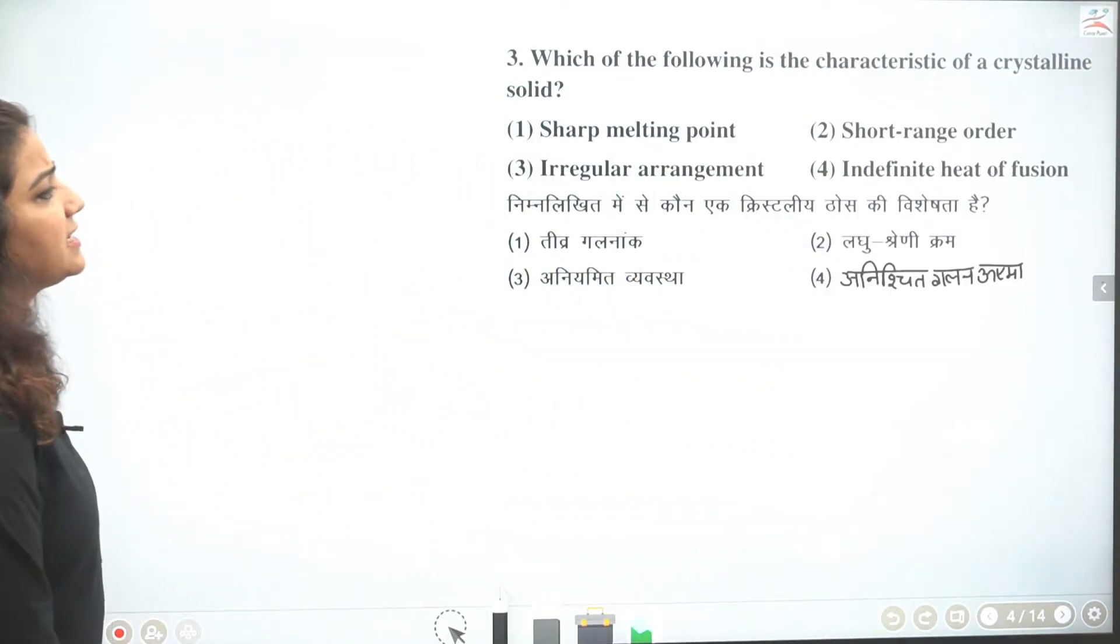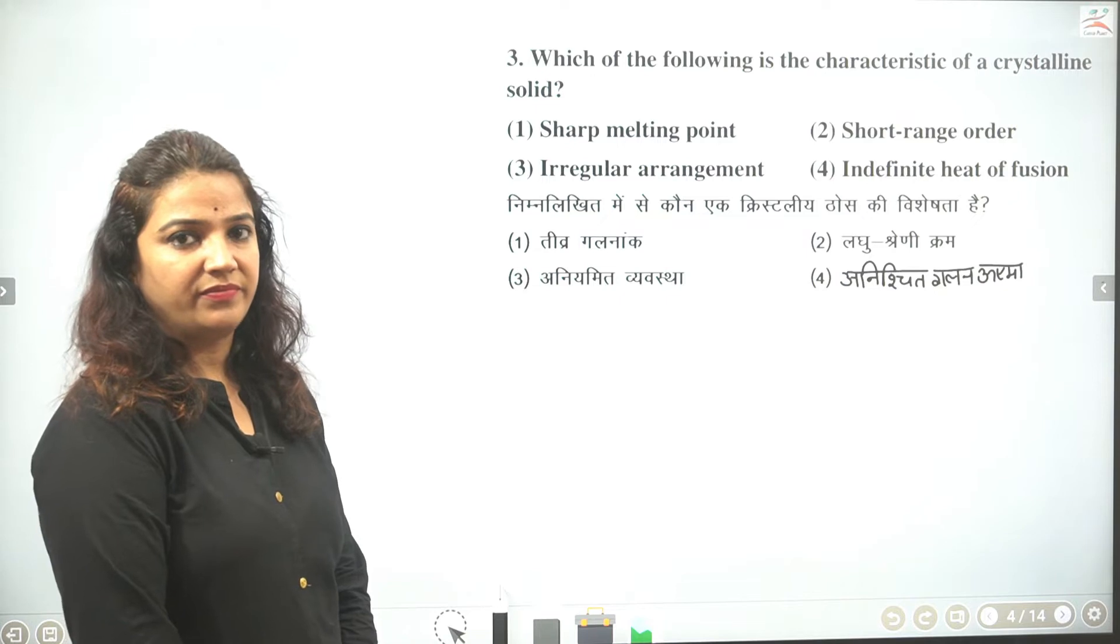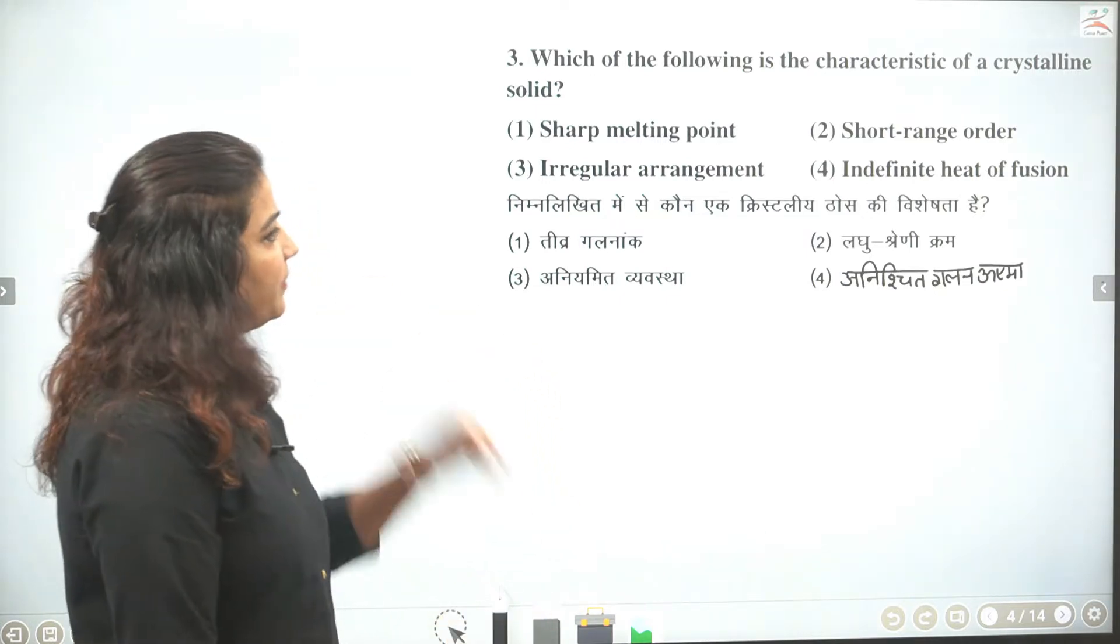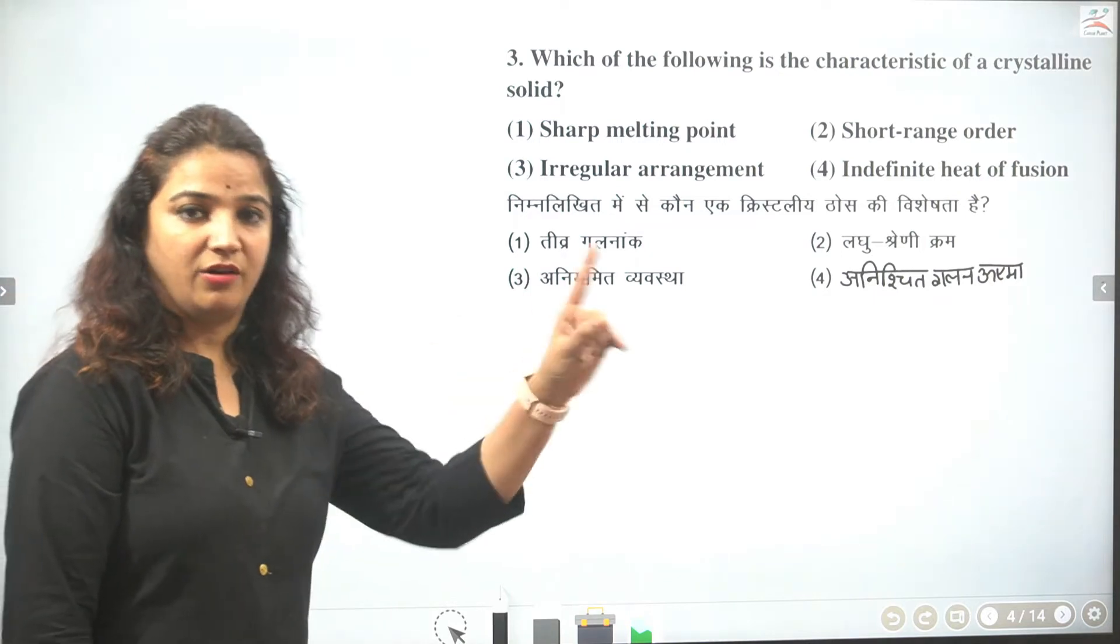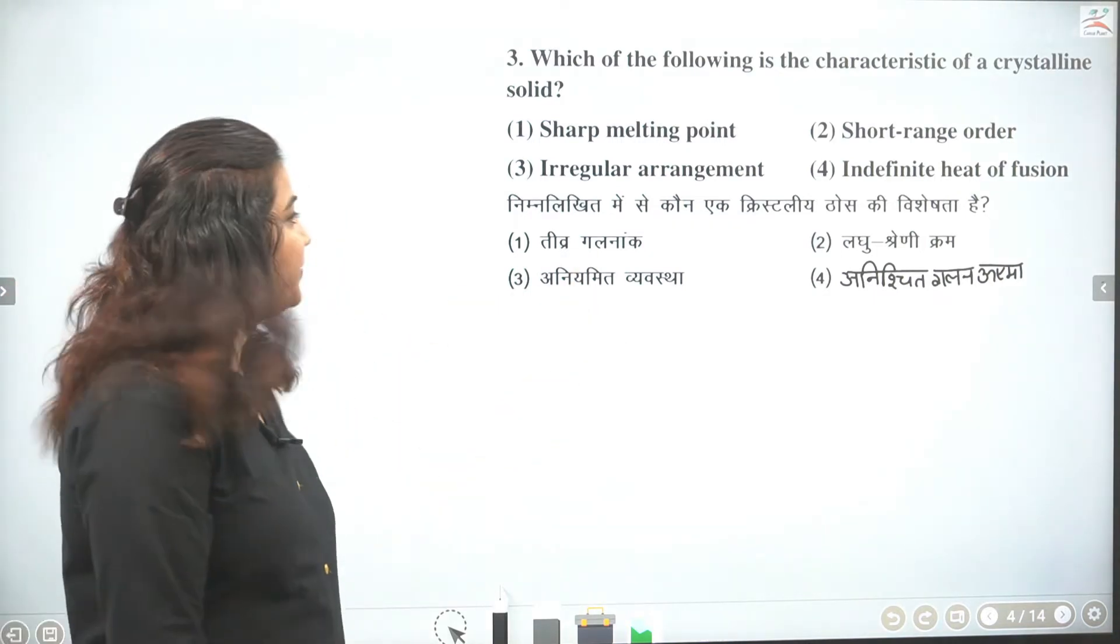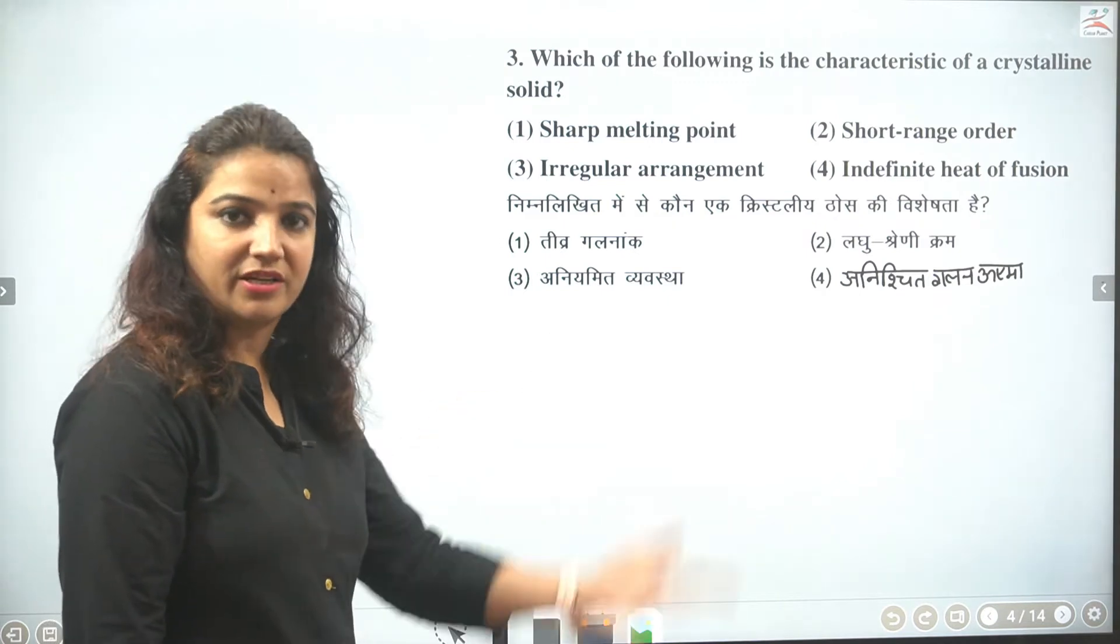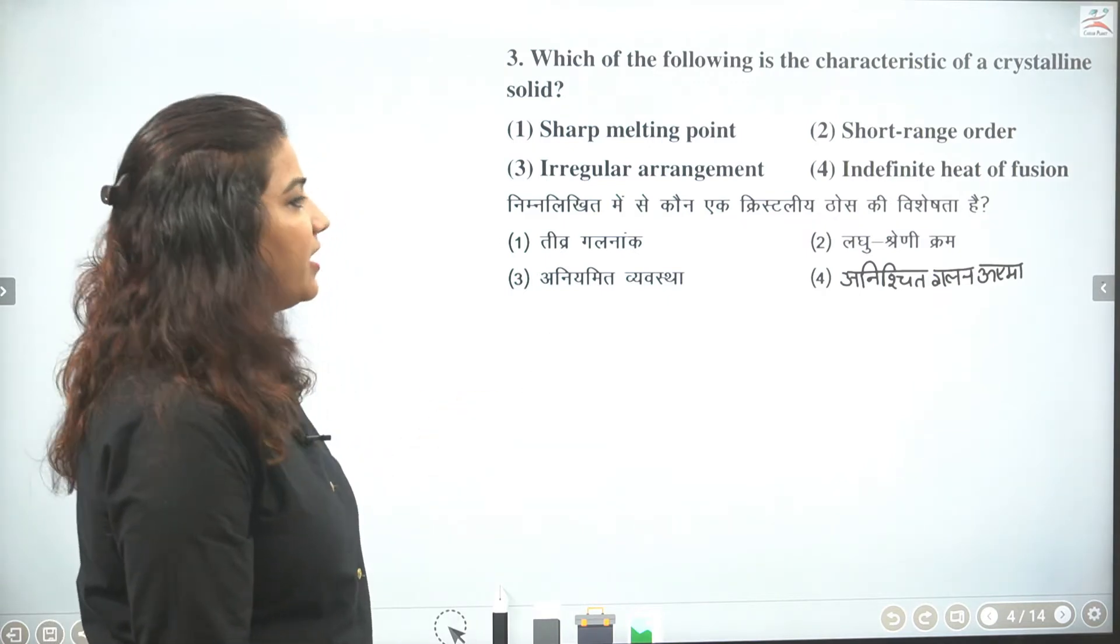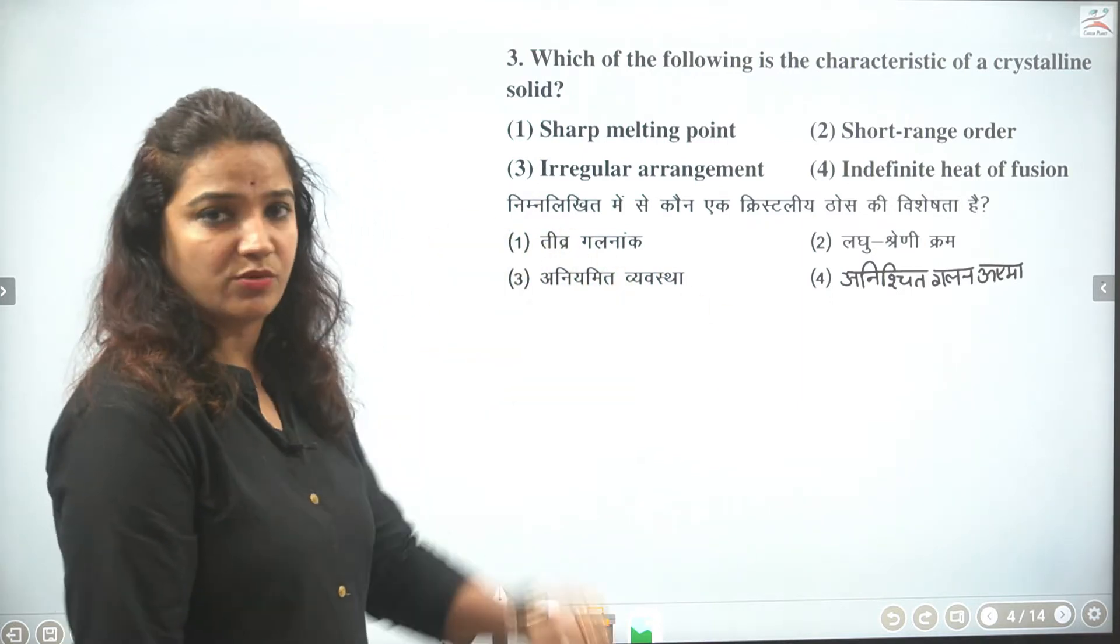Next question we have. Which of the following is the characteristic of crystalline solid? So crystal's property. So sharp melting point. So we have to say that crystal's first property is sharp melting point. Short range, so we have to say that crystal is long range. Short range is amorphous. Then irregular arrangement. Irregular is not, crystal is regular. And indefinite heat of fusion.